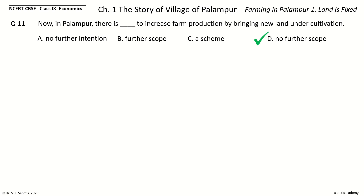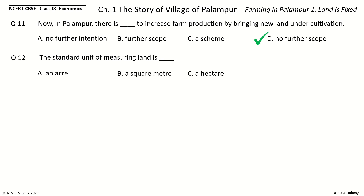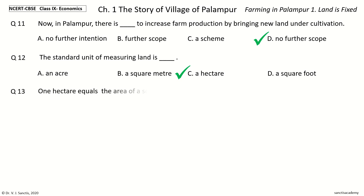Question 12: The standard unit of measuring land is Dash. The options are An acre, A square meter, A hectare, A square foot. Your time to choose. And the answer is A hectare. So, the standard unit of measuring land is a hectare.